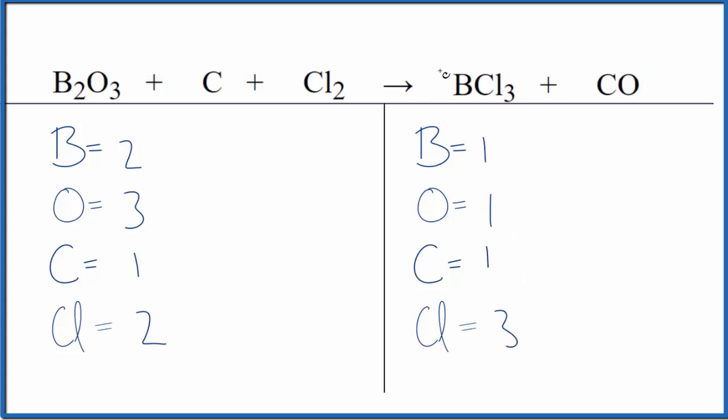Let's just balance the boron first. If we put a coefficient of two here, one times two, that'll give us two of those. And then the two, it goes to everything. So we have the three times the two. That'll give us six chlorine atoms.